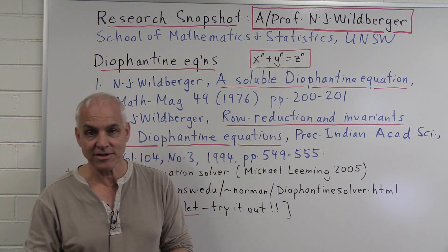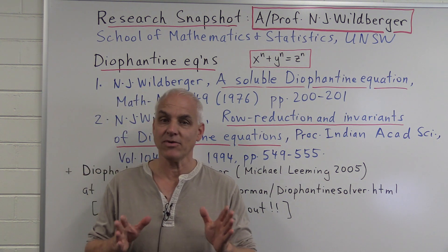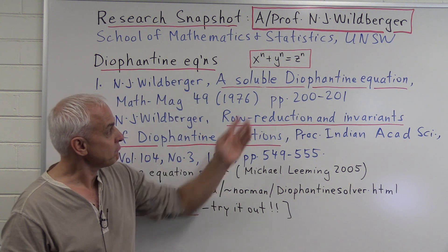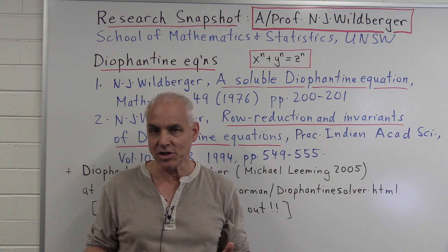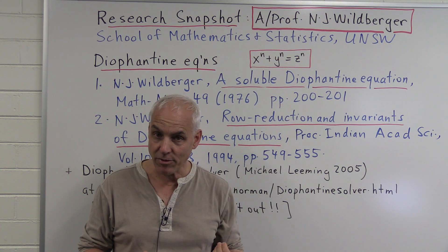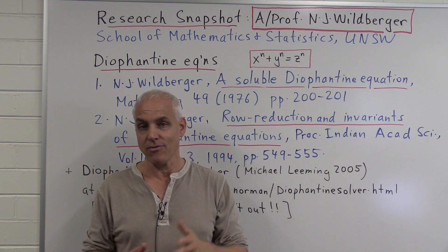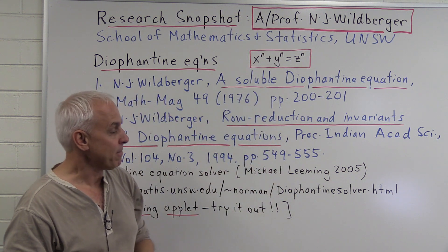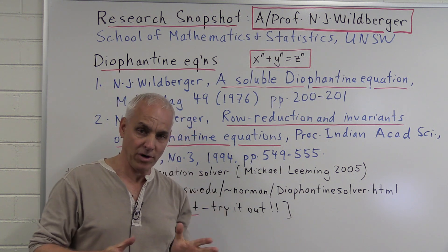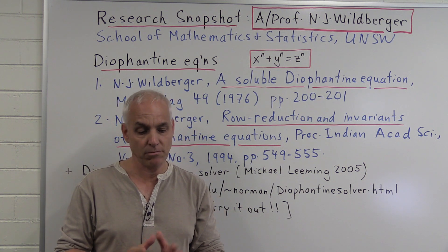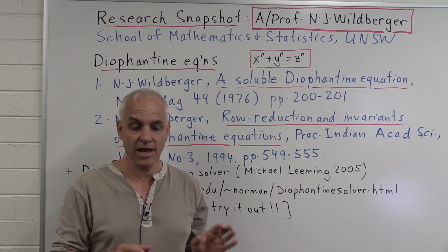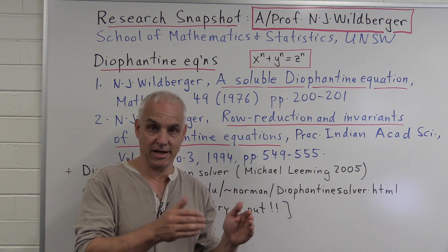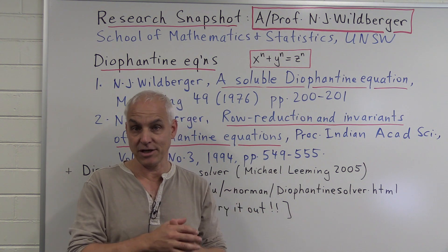This is a research snapshot. I want to tell you a little bit about my research in the direction of Diophantine equations, which are equations like this one here, where we're looking for solutions in natural numbers, integers, or rational numbers. You go back to Diophantus, a mathematician of around 300 AD. They're notorious for being very difficult to solve, so most of the work done in this direction has focused on specific equations and particular techniques for solving particular equations.